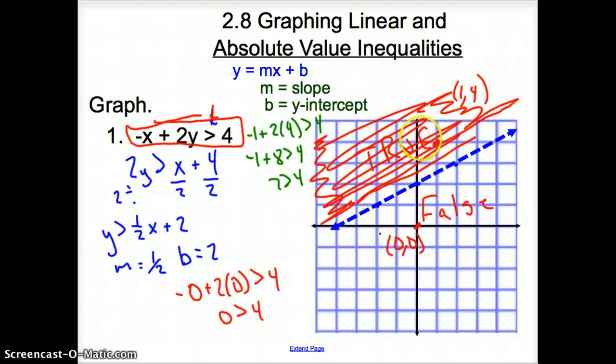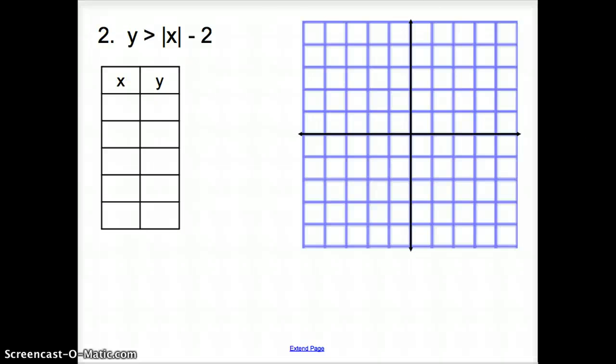that I already shaded, 1, 4, and it worked. Alright? So, that is how we graph a linear inequality. Now, how do we graph an absolute value inequality? Well, we still graph it the same exact way that we would graph an absolute value. Alright? So, start off the same. Remember,